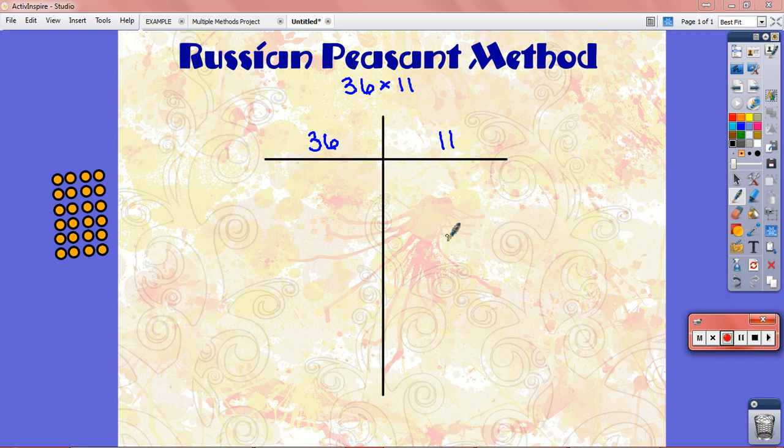Russian peasant method is one of the most interesting multiplication methods that I've seen. But it's also challenging, especially when you try to understand how and why it works.